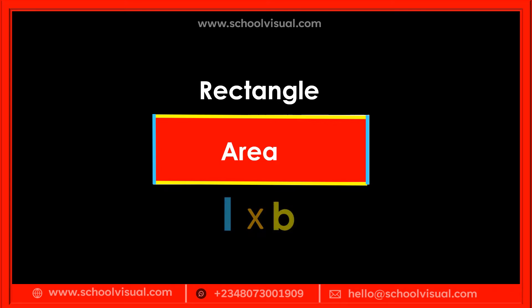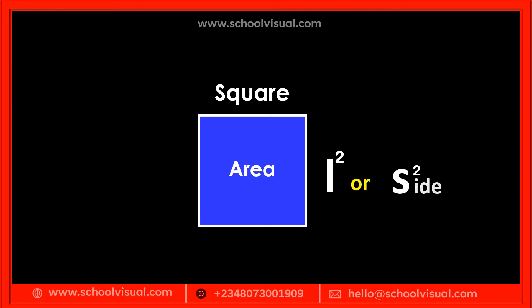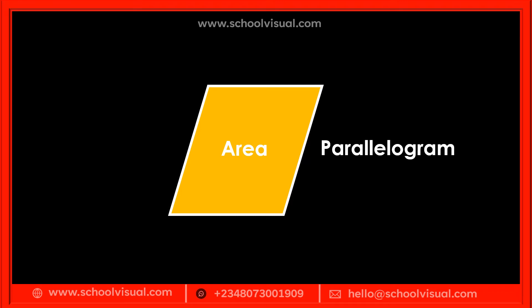The area of a square is L squared, where L stands for length, or we can say S squared, where S stands for the sides — all sides are equal, so we use S squared or L squared. The area of a parallelogram is the base times the height.